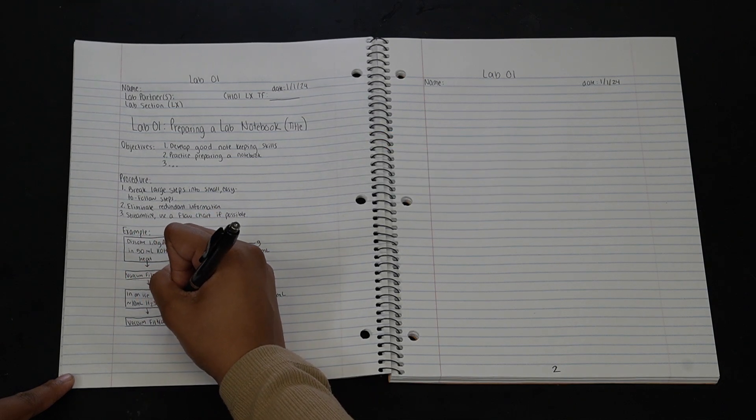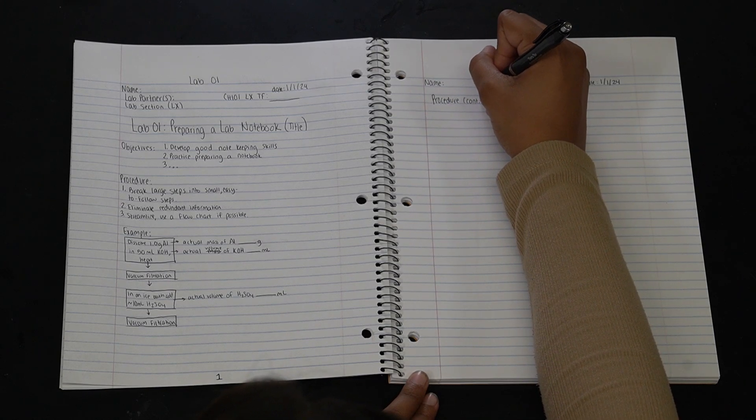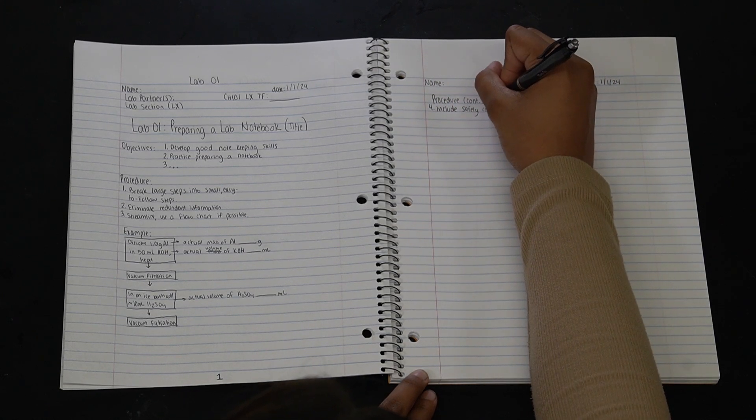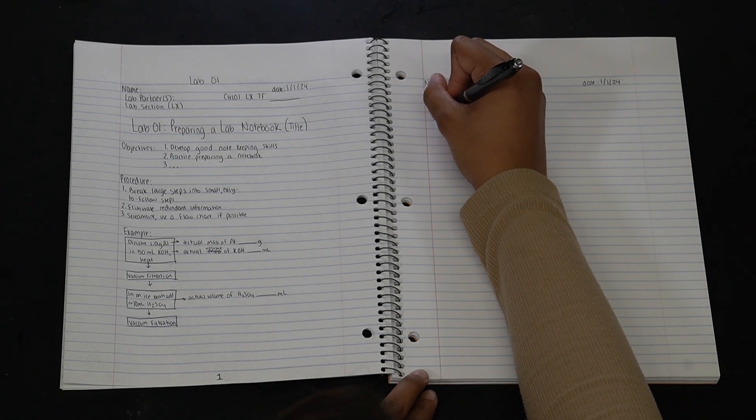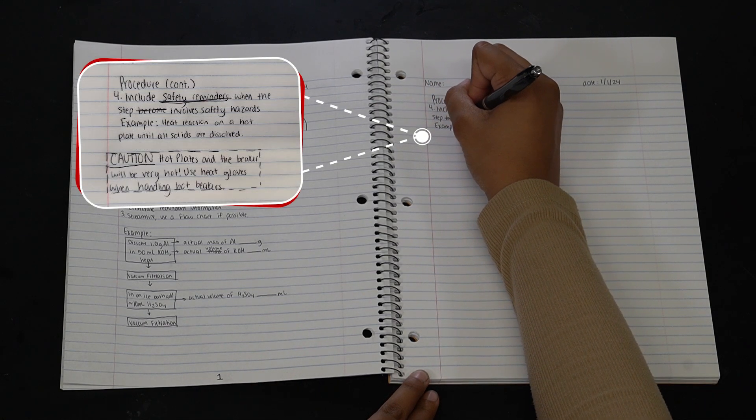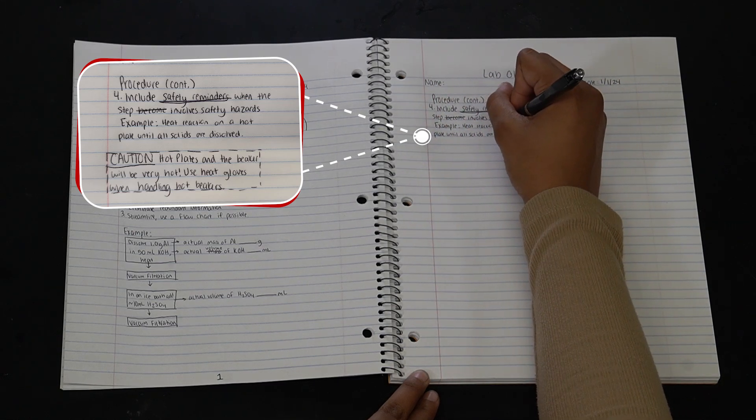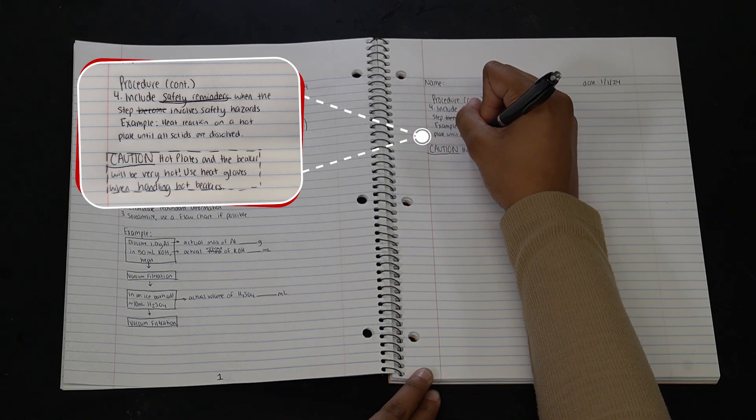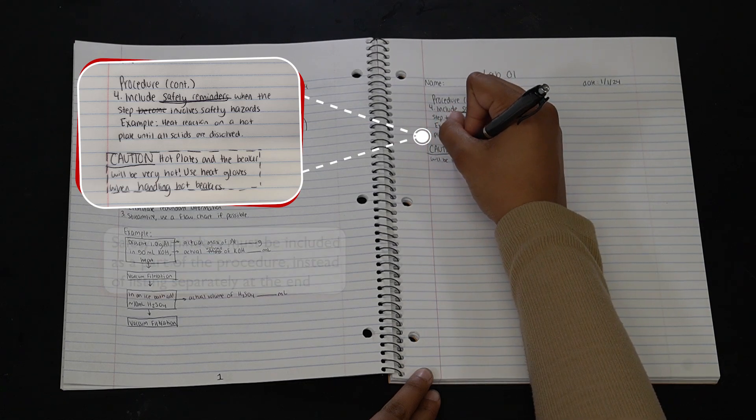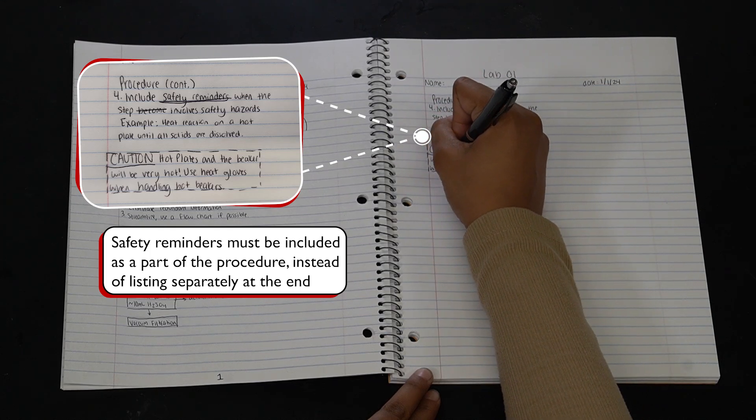We should always include diagrams or flow charts where applicable. While it is recommended that we only write down a simplified version of the experimental procedure, there are a few additional details that we should pay special attention to. First, we should always include important safety reminders when a step involves the use of a hazardous chemical or a potentially dangerous operation. The manual will provide safety reminders. We should always include those and highlight them in our notebook so that while performing the experiment, we are fully aware of the potential danger of the step. Some experimental protocols list safety hazards and waste handling instructions at the end of the procedure. That's not very useful. They must be included at the relevant steps in the procedure.